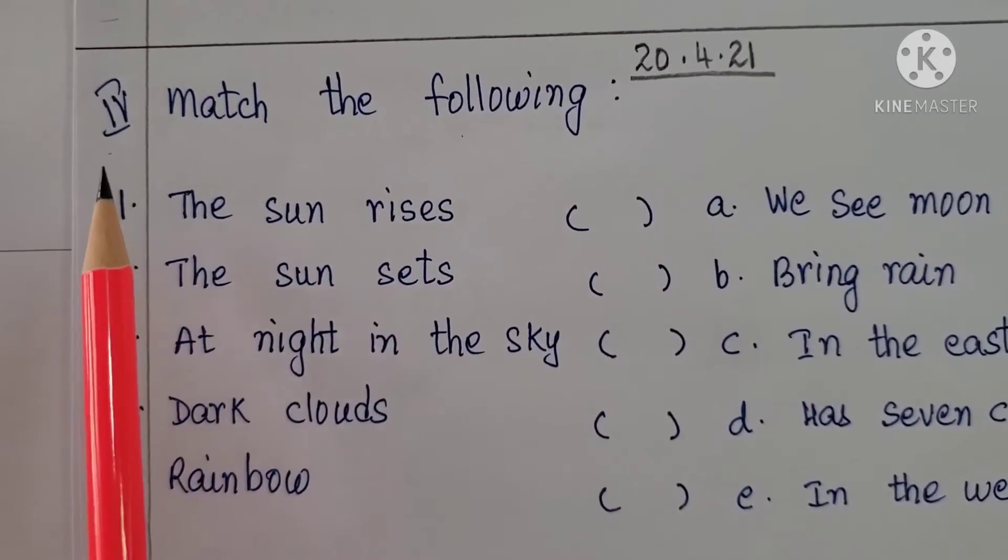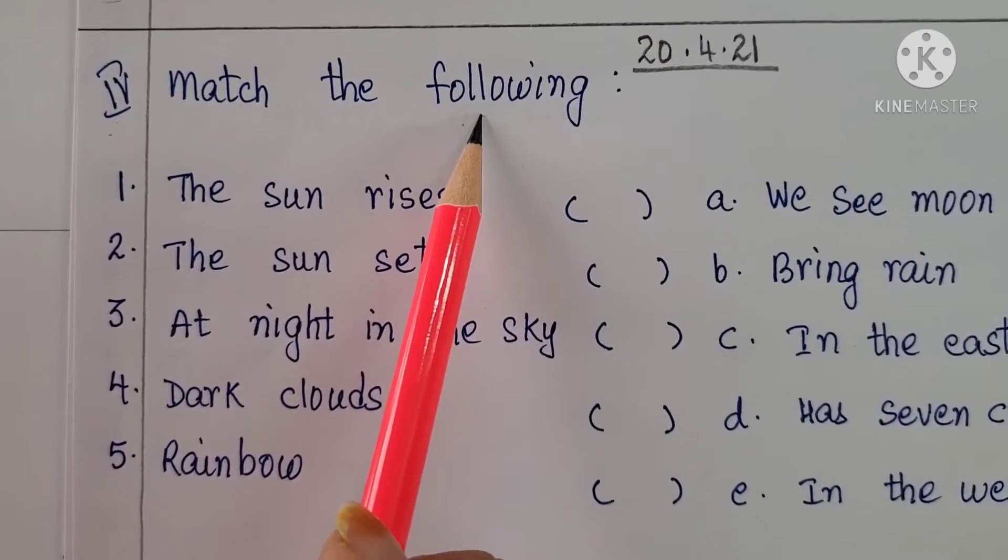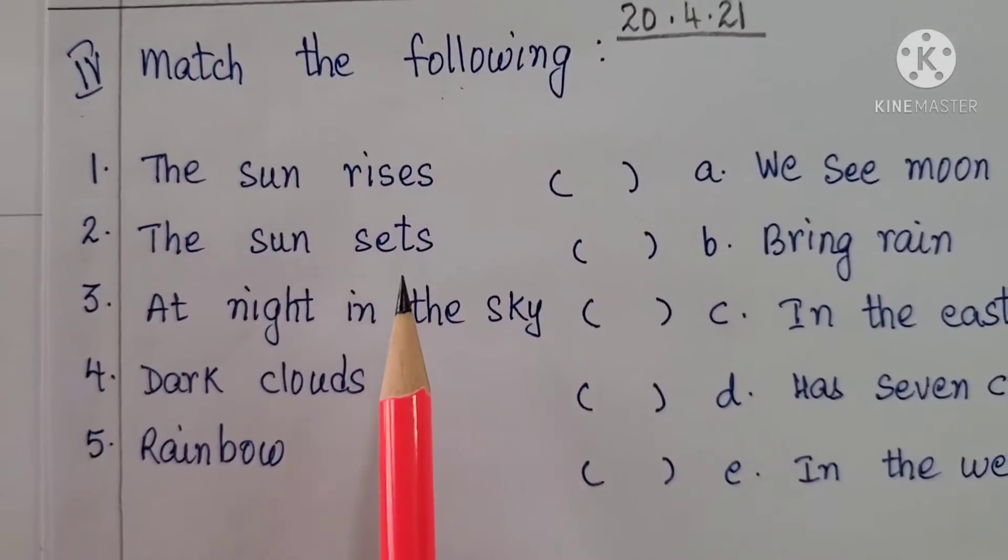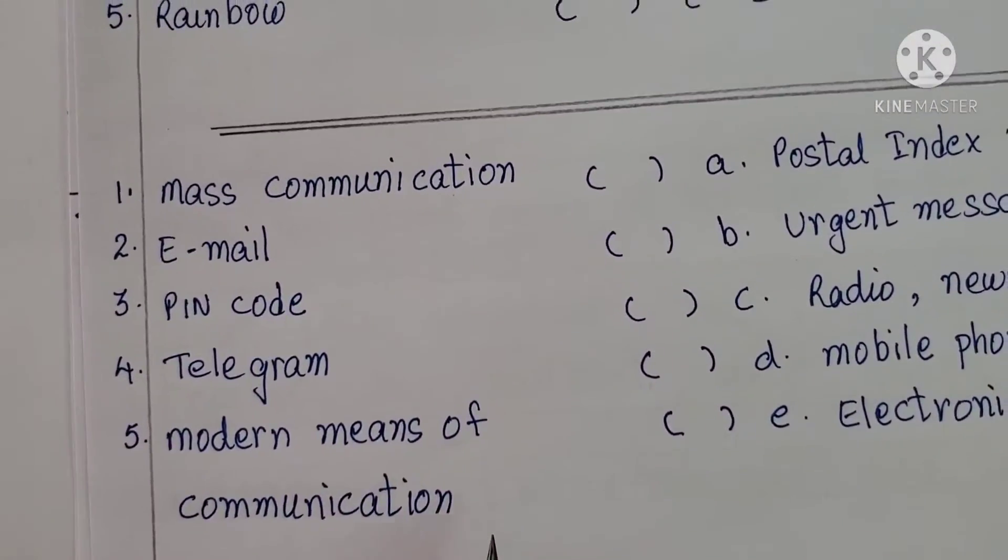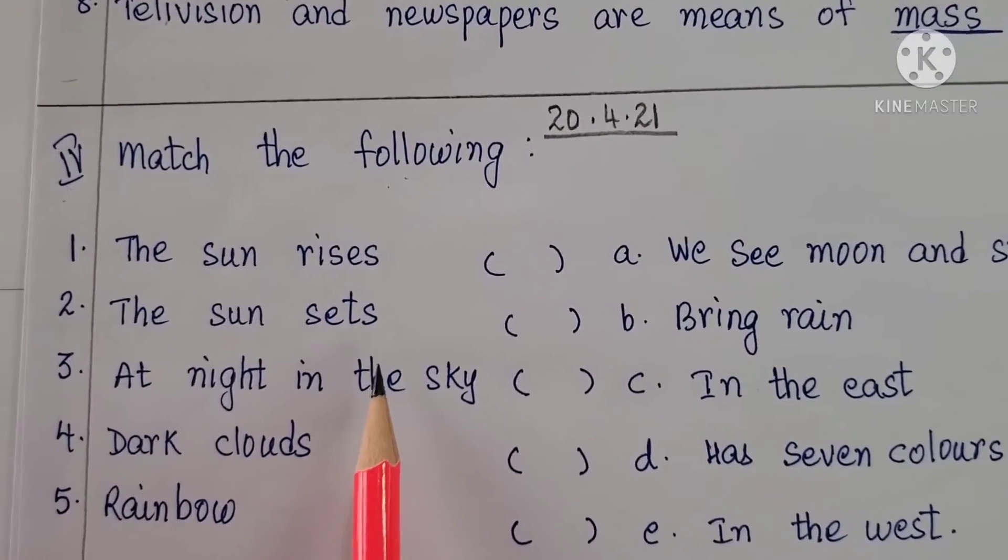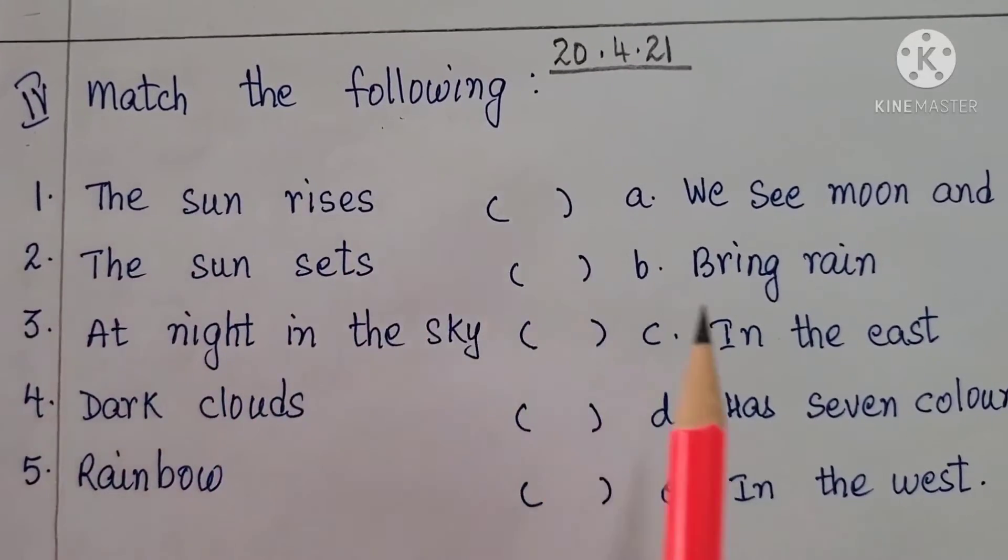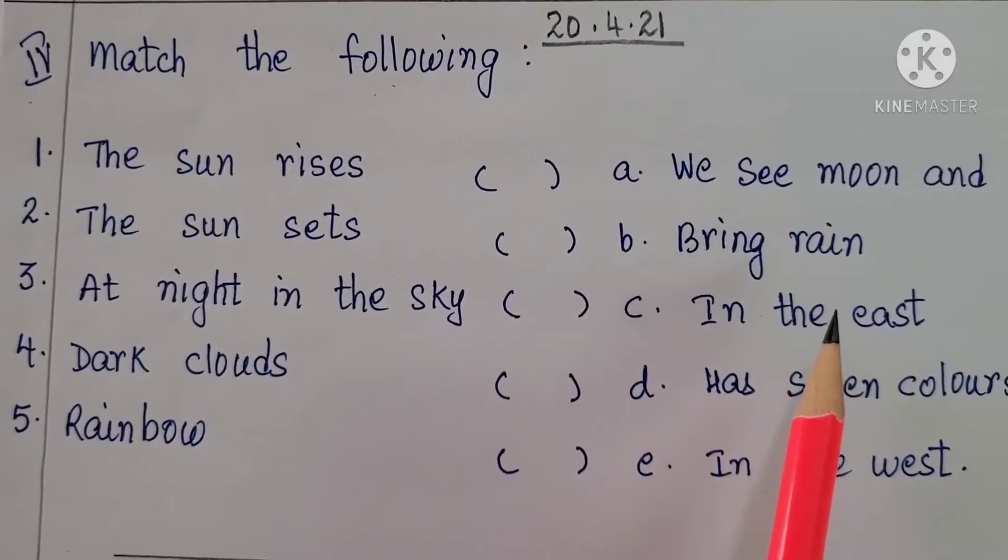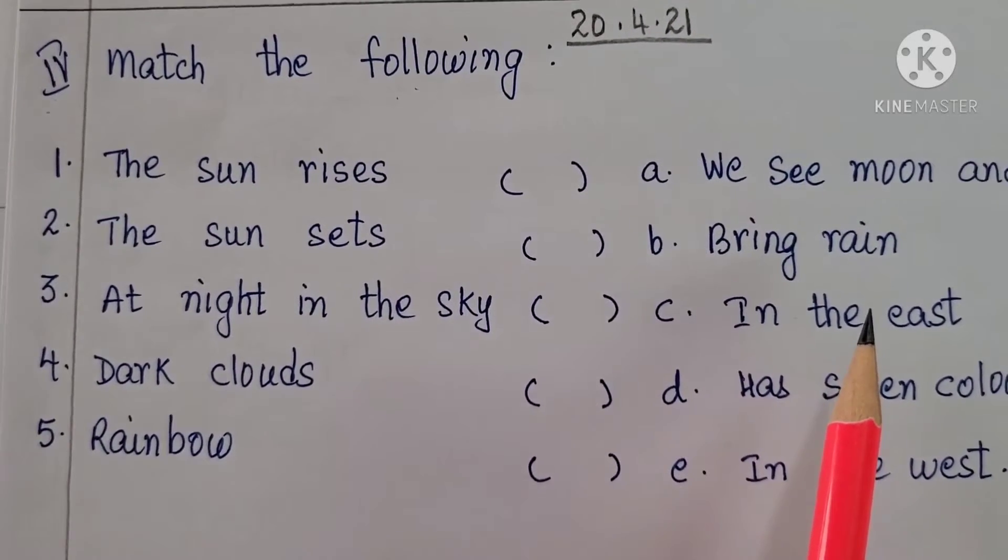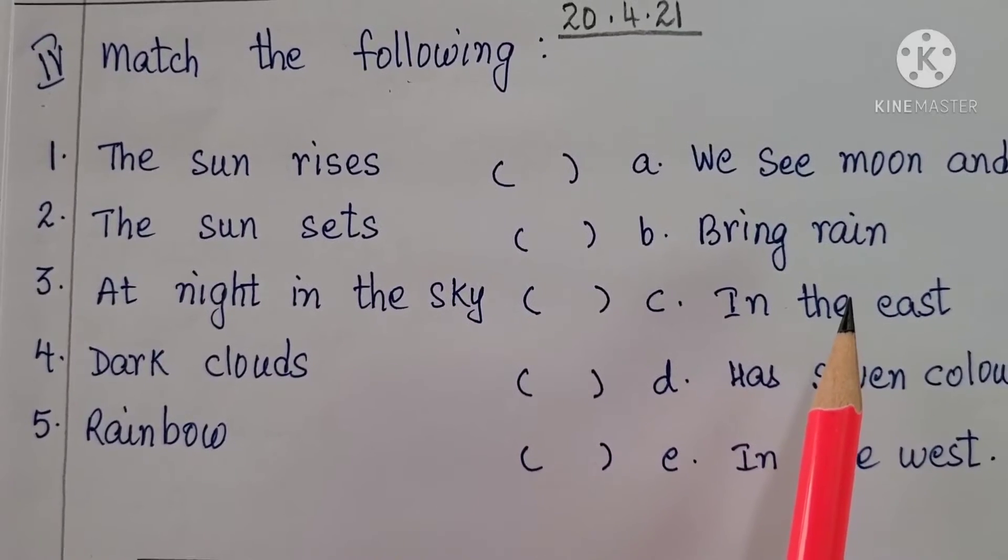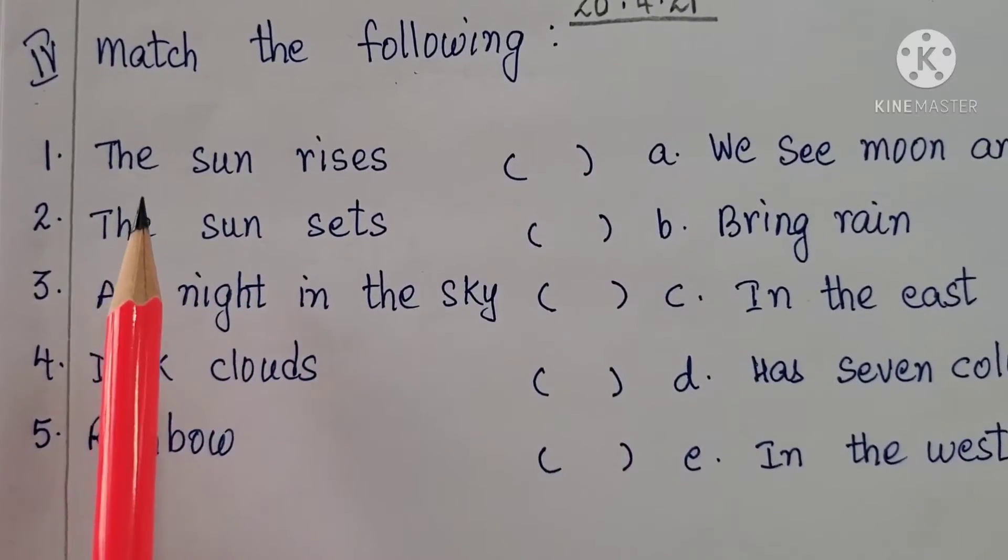First we will be doing today 4th bit match the following for our essay 2 exam. So there will be 2 sets of match the following. First we will do the first one. Always read and then match it with the appropriate sentence in column B. Reading is a must children. Please read it on your own. It will be very easy to write in your exam. So let us start the class.